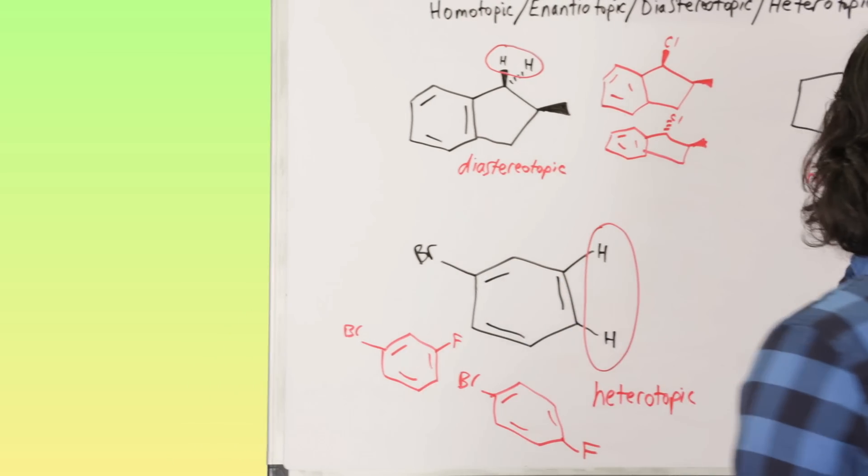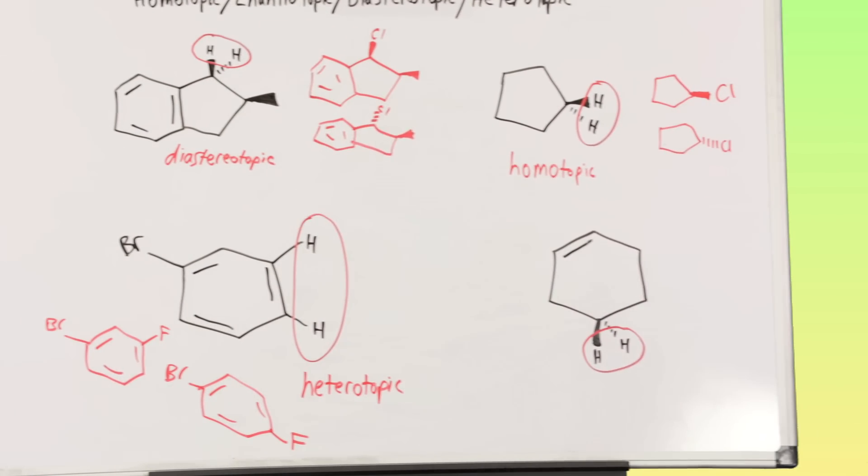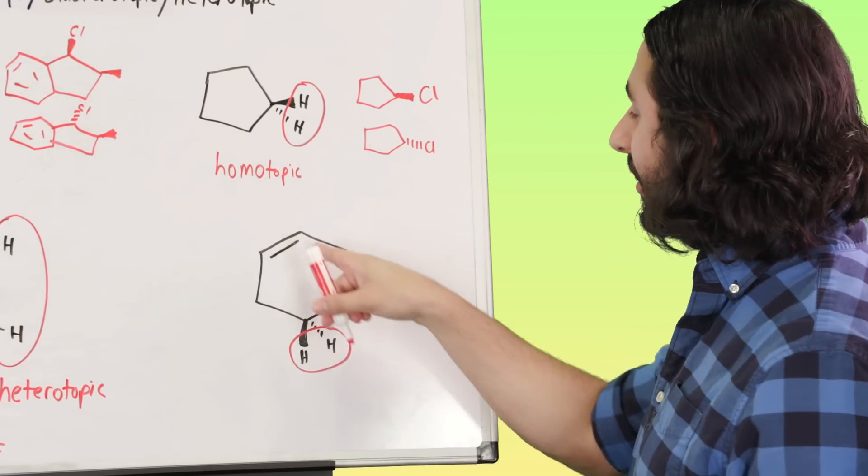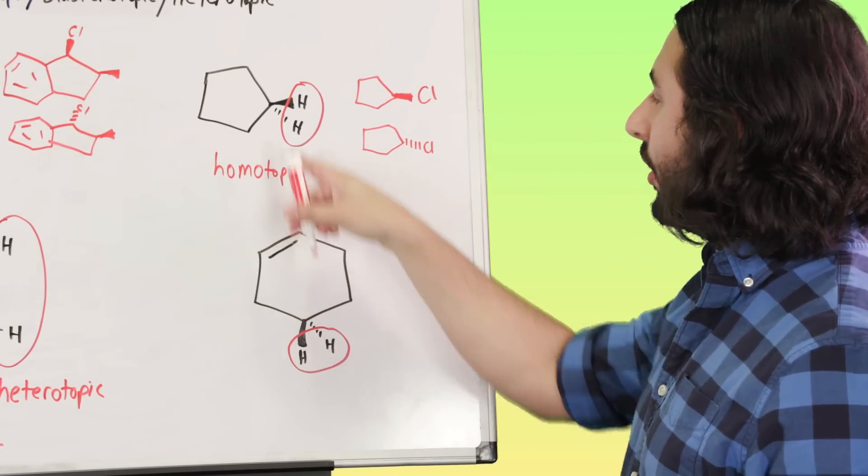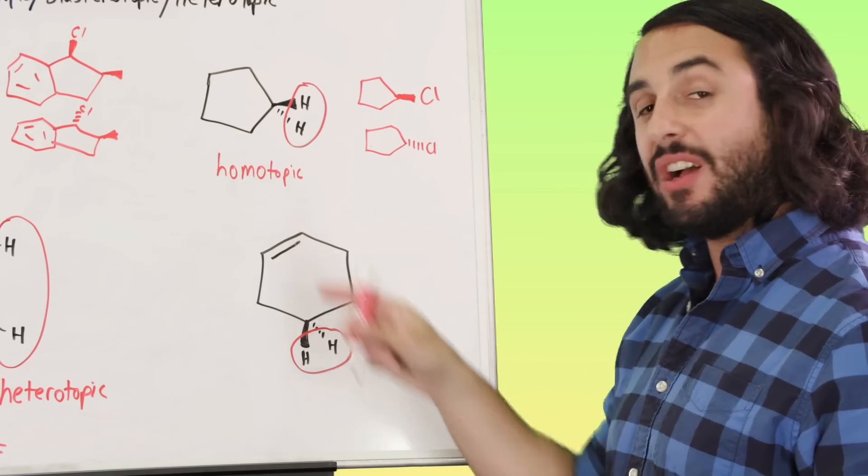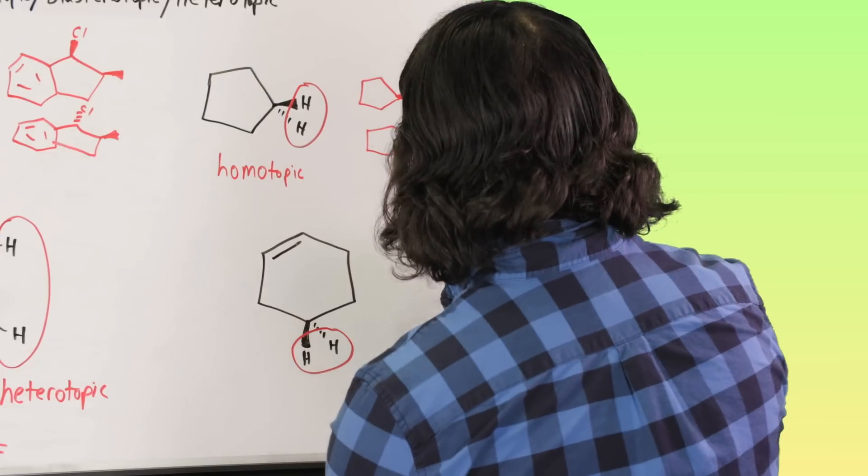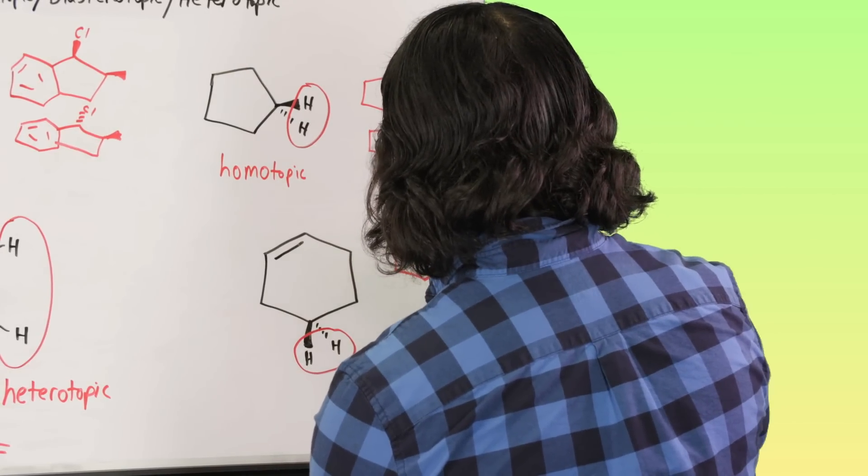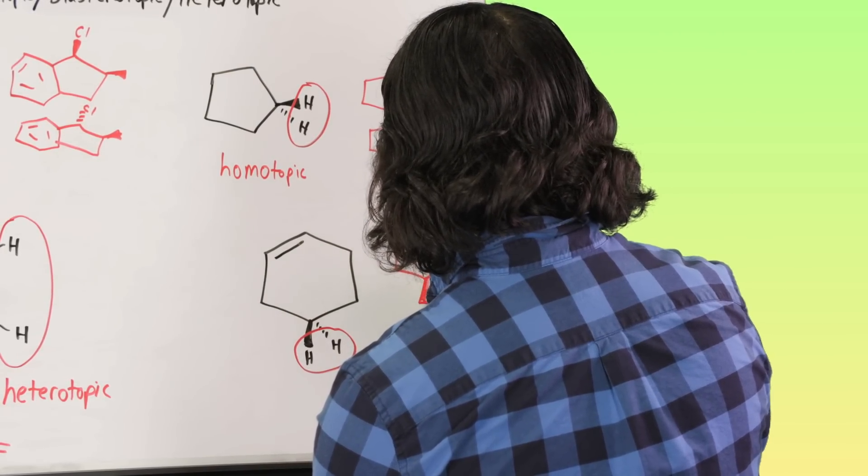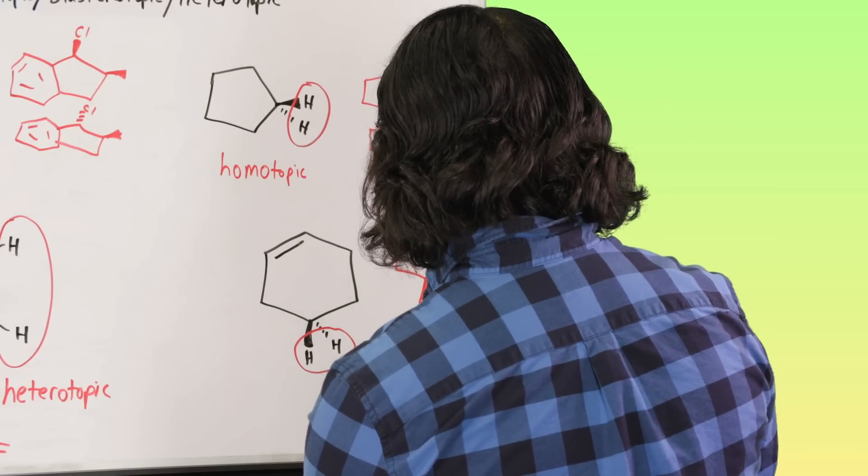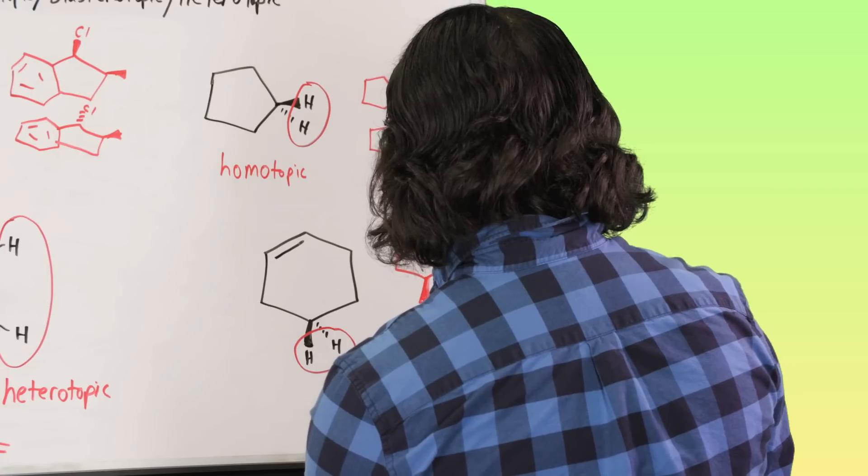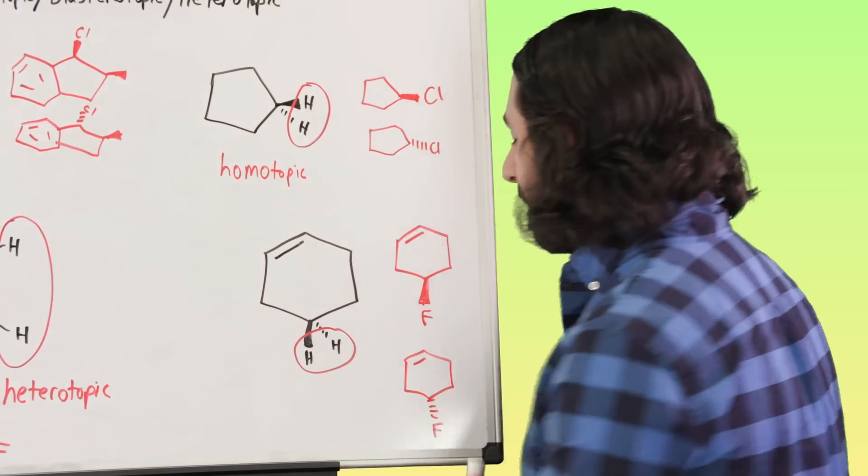And then lastly over here we've got this situation. Now notice that there is a pi bond here, that is very structurally significant because without this pi bond we would just have this situation again, and certainly they'd be homotopic, but because of that pi bond we are actually generating a chiral center. Let's say we put a fluorine there versus a fluorine here.